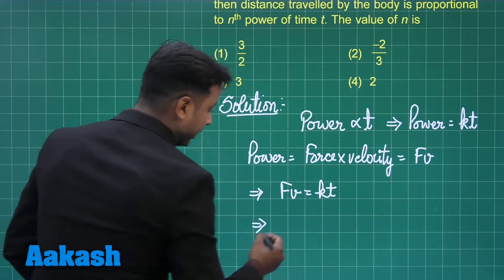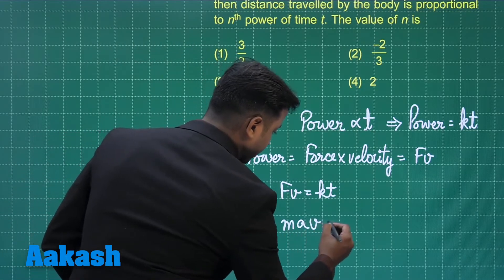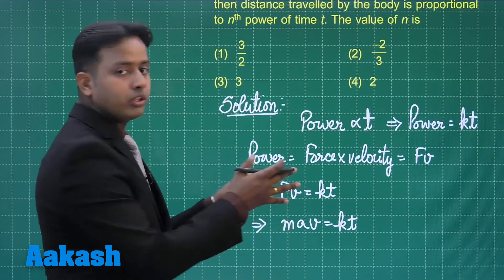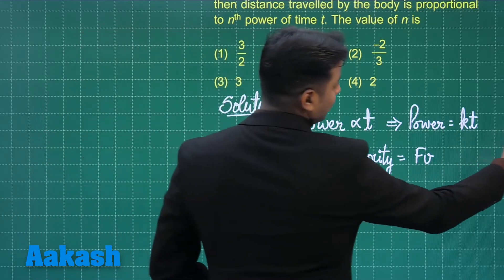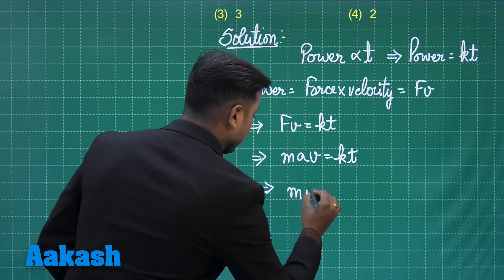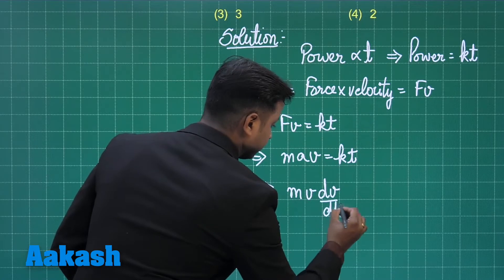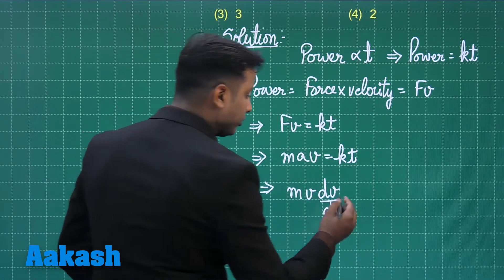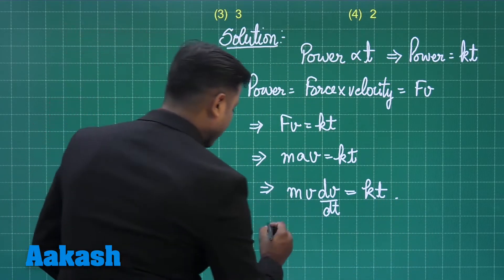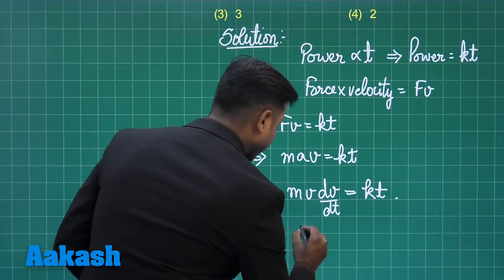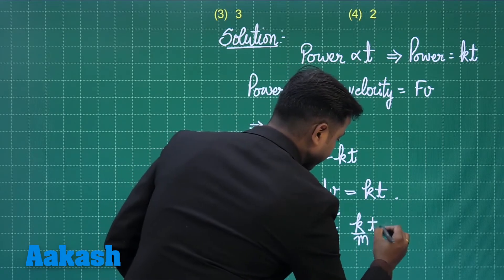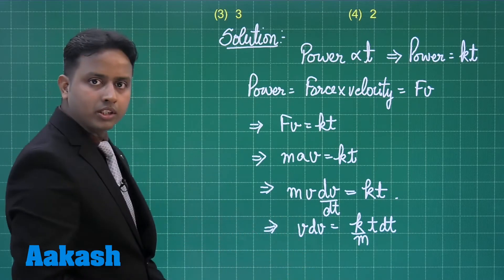This force can be written as M·A, so M·A·V = k·t. We need to find the function for velocity to determine displacement. Writing acceleration as dV/dt, we get M·V·(dV/dt) = k·t. Reshuffling gives V dV = (k/M)·t dt.